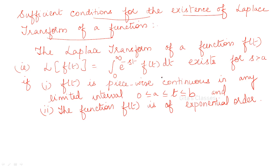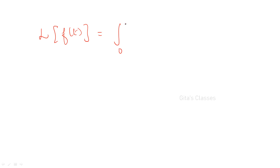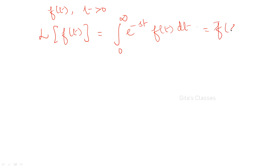The sufficient condition for the existence of Laplace transform is: the Laplace transform of a function exists for s greater than a, if it satisfies two conditions. First, f of t is piecewise continuous in any limited interval a to b. Second, the function f of t is of exponential order. If these two conditions are satisfied, then you can find out the Laplace transform of the function. Remember the definition: L of f of t is equal to the integral from 0 to infinity of e power minus st times f of t dt, where f of t is defined for t greater than 0, and the resultant value is a function of s only.